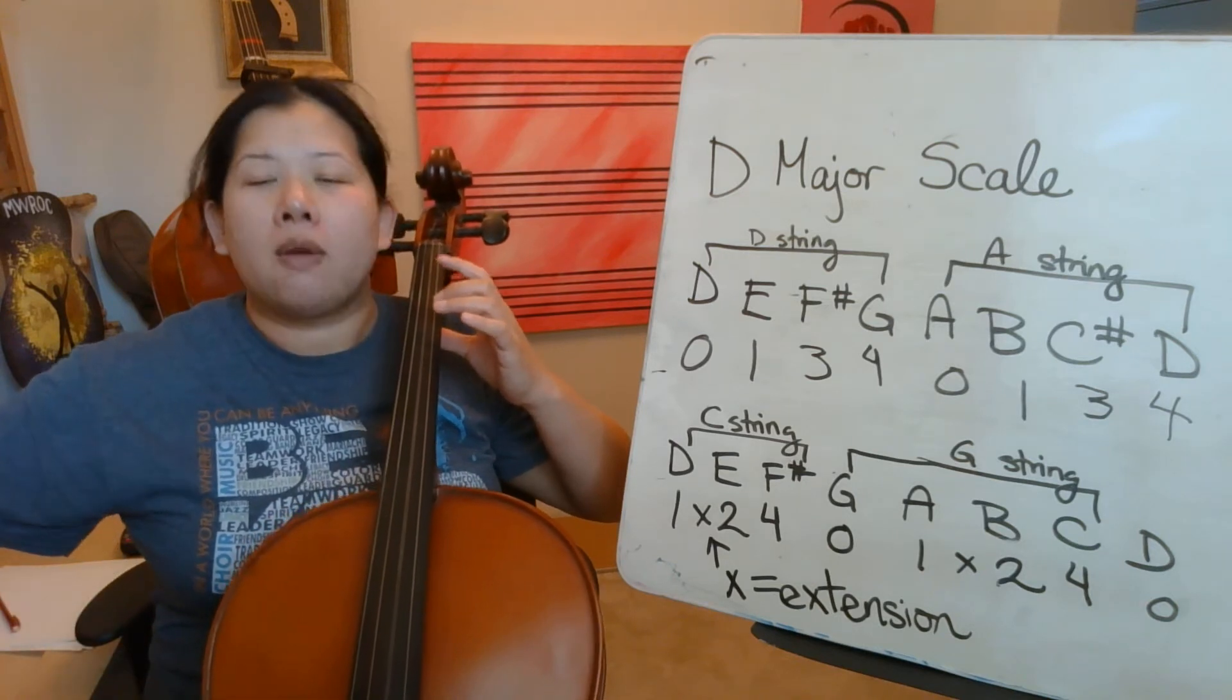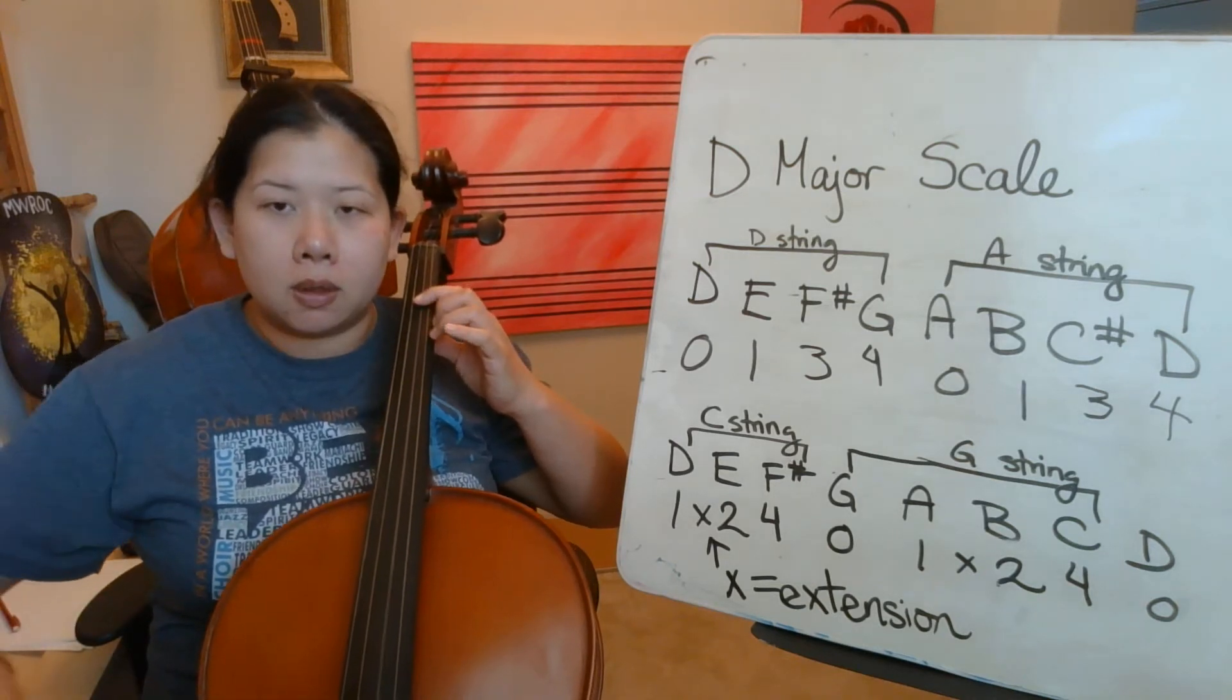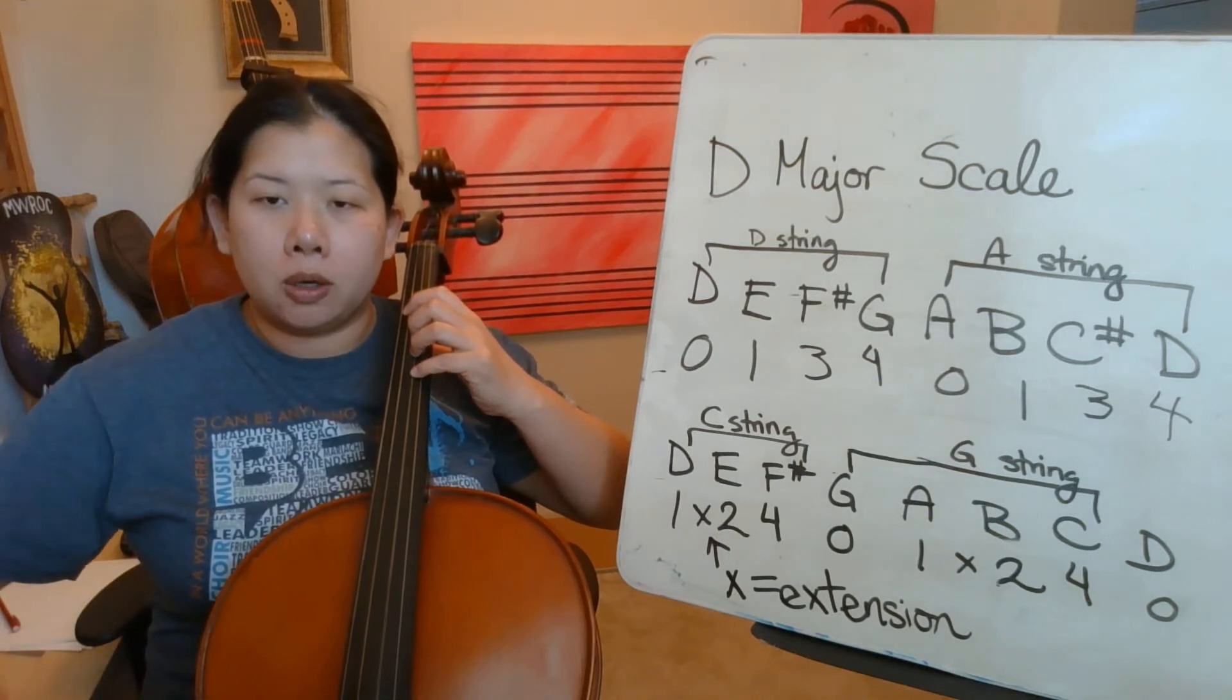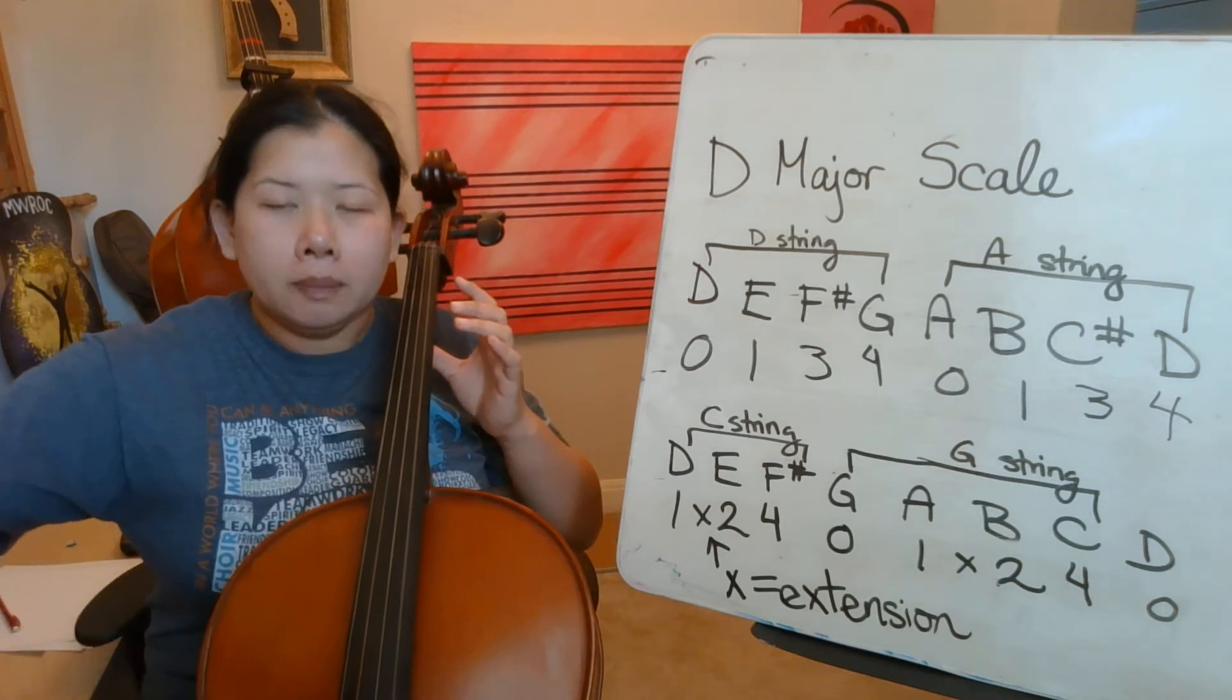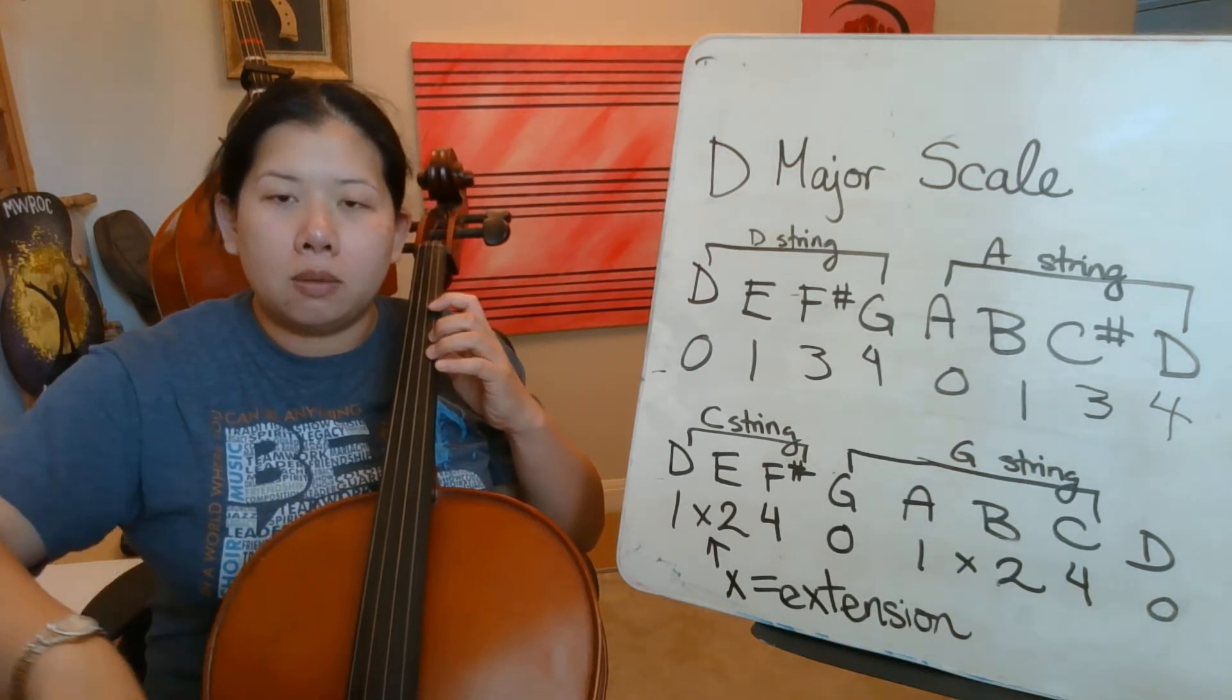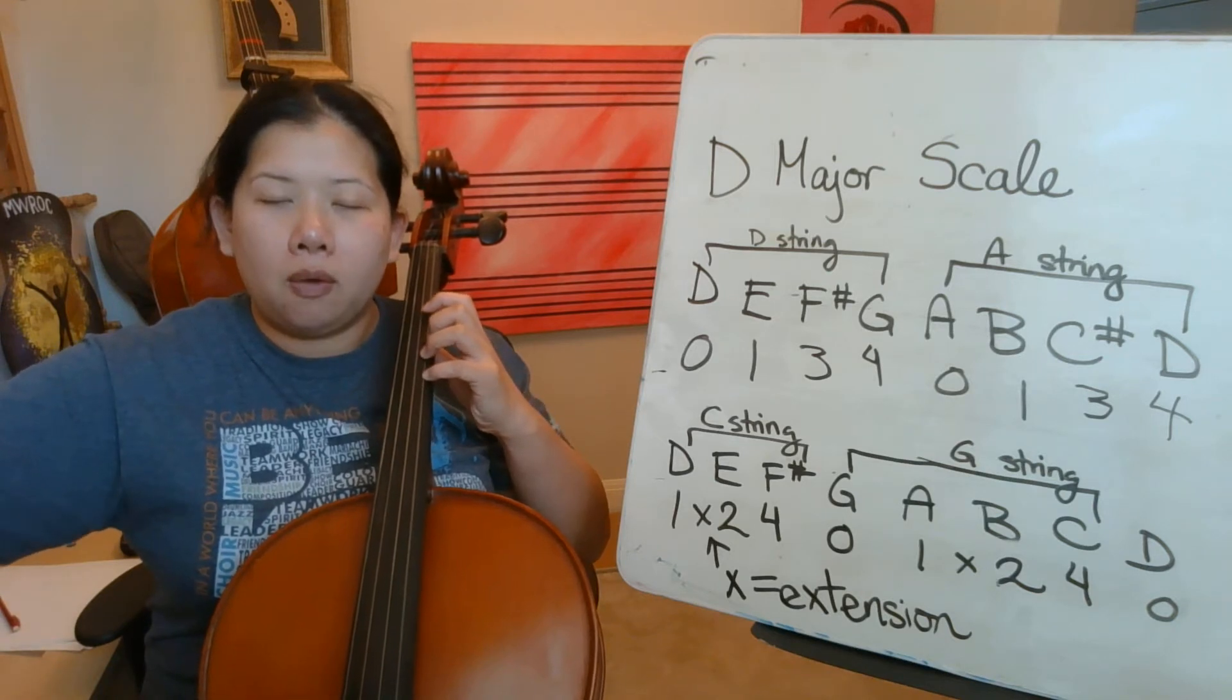D. First finger, E, yellow. Third finger, red. Third finger, red, F sharp. Fourth finger, G, blue. Open A. C, yellow. Third finger, red. Fourth finger, A. Fourth finger, D.